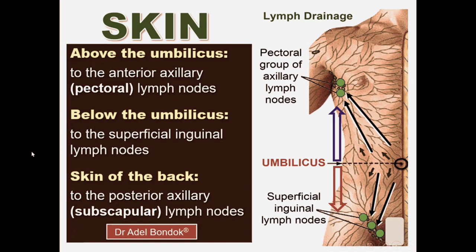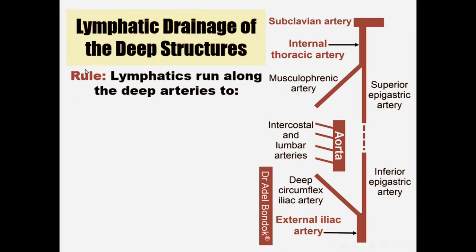Now we move to the deep structures. The basic concept of lymph drainage of the deep structures is that lymphatics run along the arteries. Regarding the deep structures — muscles and the parietal layer of the peritoneum — lymphatics follow specific arterial routes.